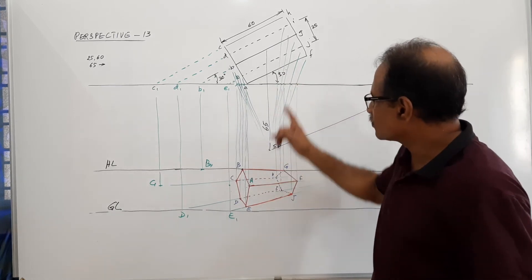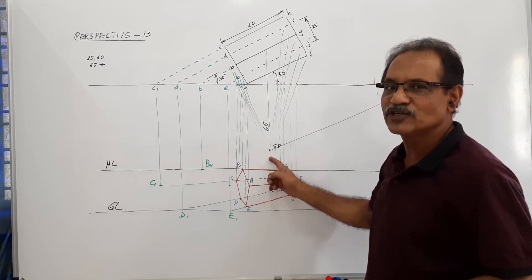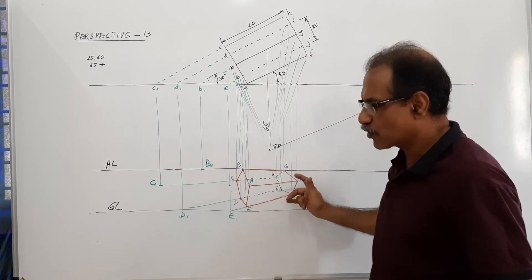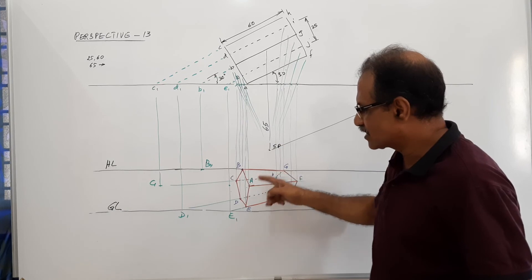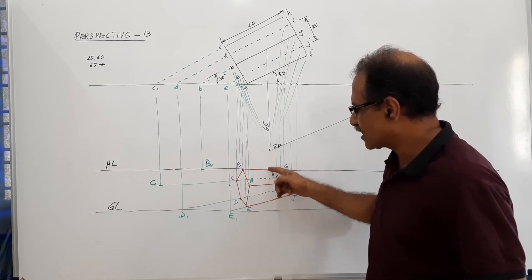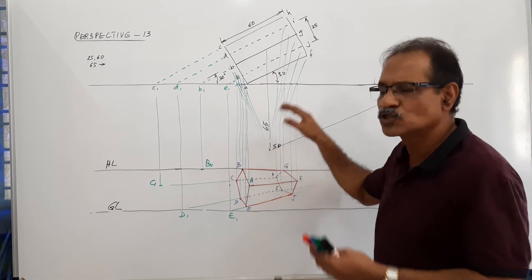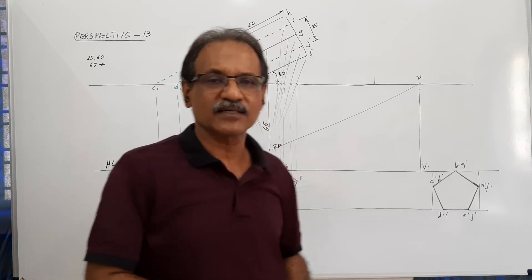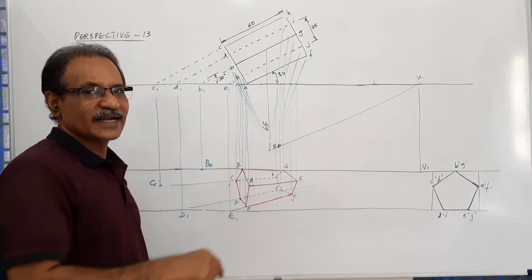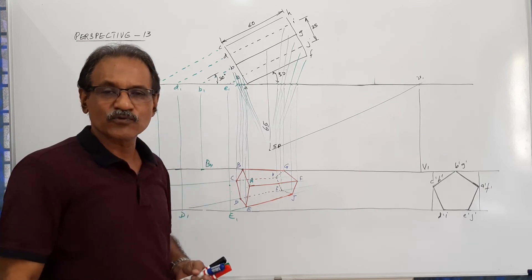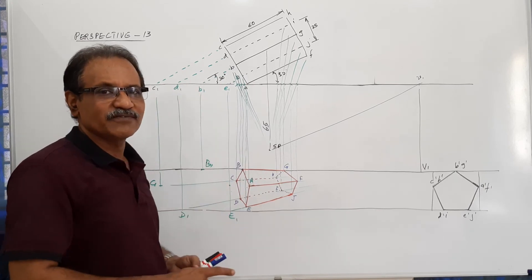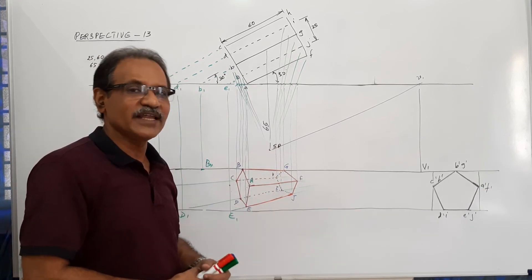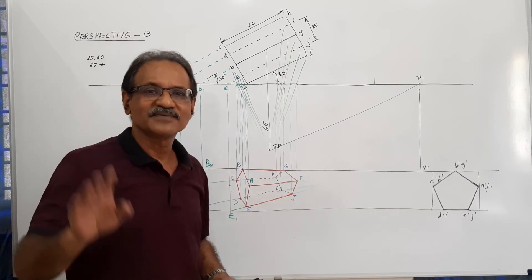Consider the visual ray method: the station point is right in front of the object. You would have five plus five points in the plan and five plus five in the elevation — ten points joined to SP, intercepts to be drawn — totally confusing, with 99% probability of error. But this single vanishing point procedure is error-proof. We will draw another question where a cylinder is treated with a very similar procedure — also a very frequent university question.